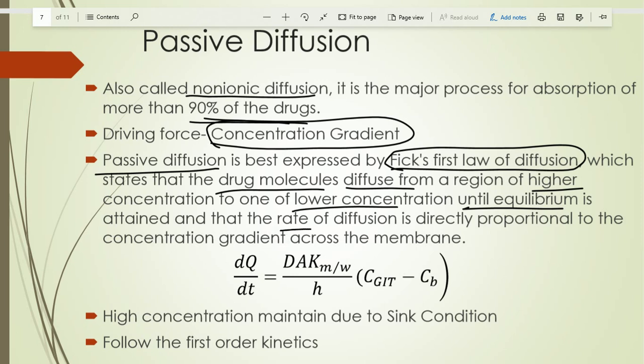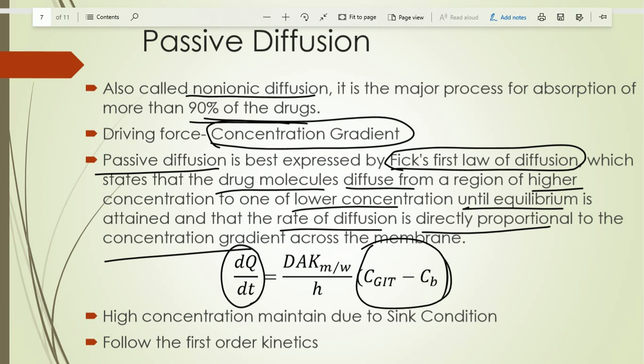In simple terms, the rate of diffusion is directly proportional to the concentration gradient of the membrane. The equation is: dQ/dt is directly proportional to the concentration gradient. The coefficient D·A·K divided by h, where D is the diffusion coefficient, A is the area through which the drug is absorbed, K is the lipophilicity of the drug molecule, and h is the thickness of the membrane.